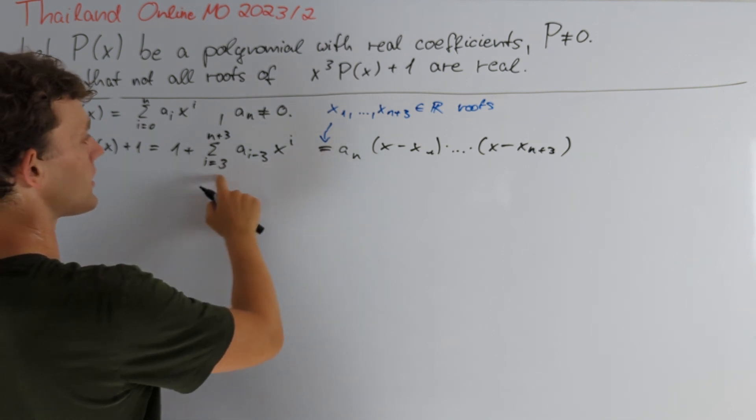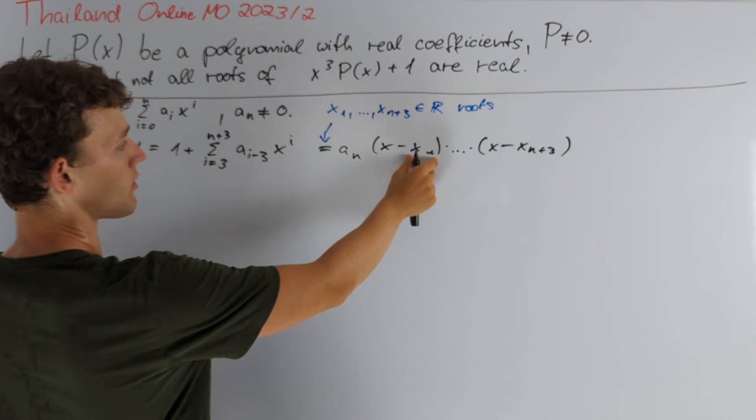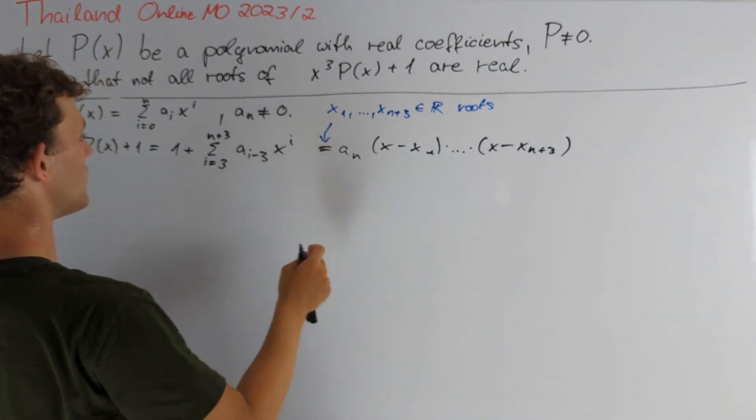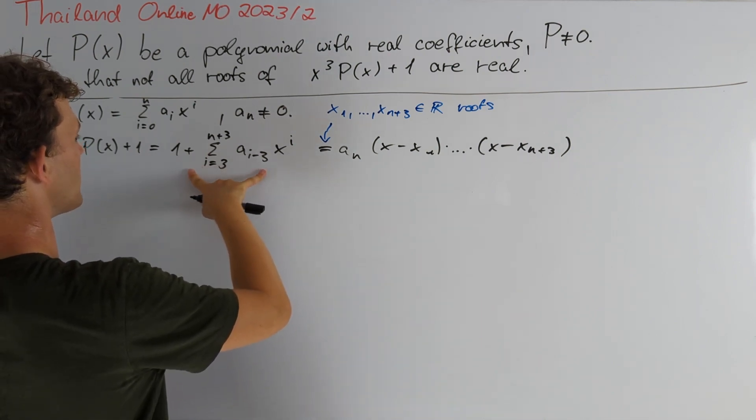Taking a look at this equality, we are very invited to use Vieta's theorem, because we want to get information about our roots, because we want to bring this assumption to a contradiction. And moreover, we know at least the first three coefficients of that polynomial, namely 1, 0 and 0.